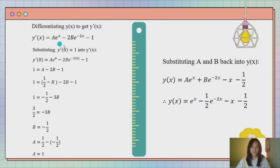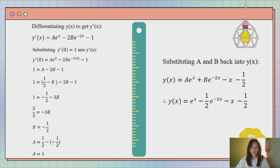We get ae^x minus 2be^(minus 2x) minus 1. Then we substitute the initial value y prime(0) equal to 1 into the equation to get our values of a and b. For a, we get 1, and for b, we get negative 1 over 2. Then we substitute the values of a and b back into y(x) to get our final answer: e^x minus 1 over 2 e^(negative 2x) minus x minus 1 over 2.